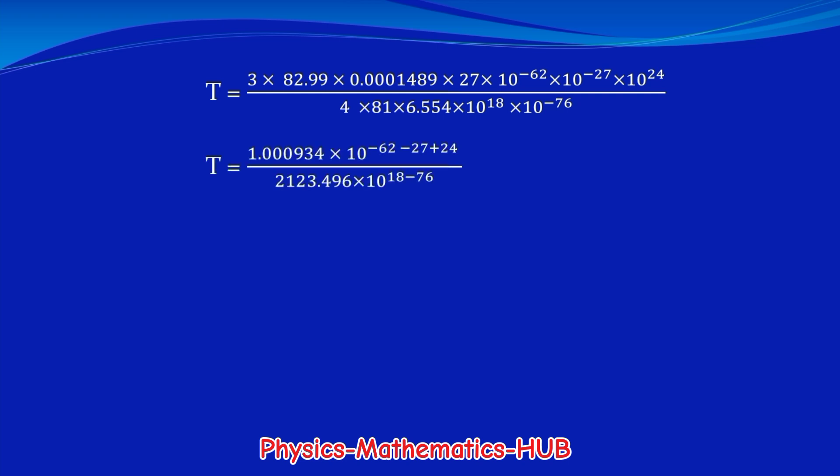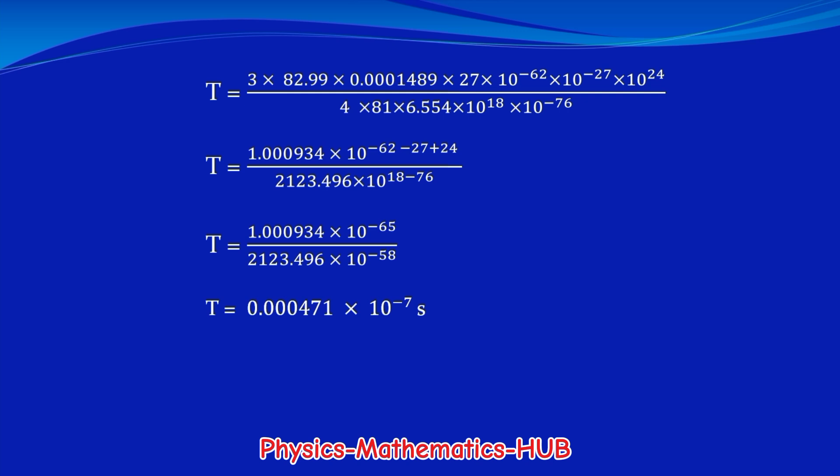After simplification we get 1.000934×10⁻⁶⁵ divided by 2123.496×10⁻⁵⁸, which gives 0.00471×10⁻⁷ seconds. In scientific notation, t = 4.71×10⁻¹¹ seconds.